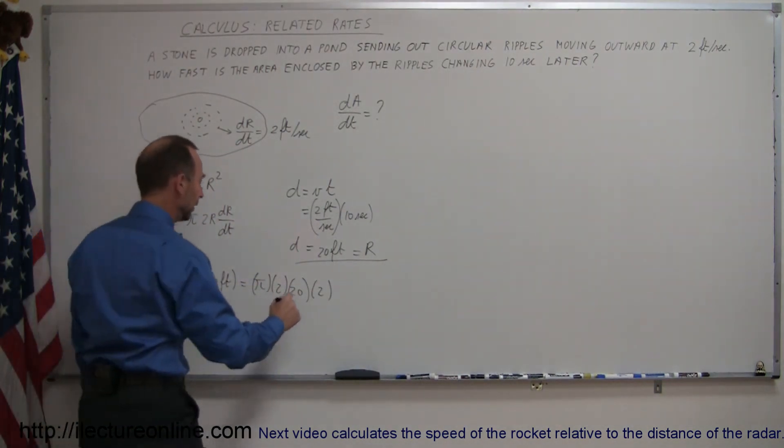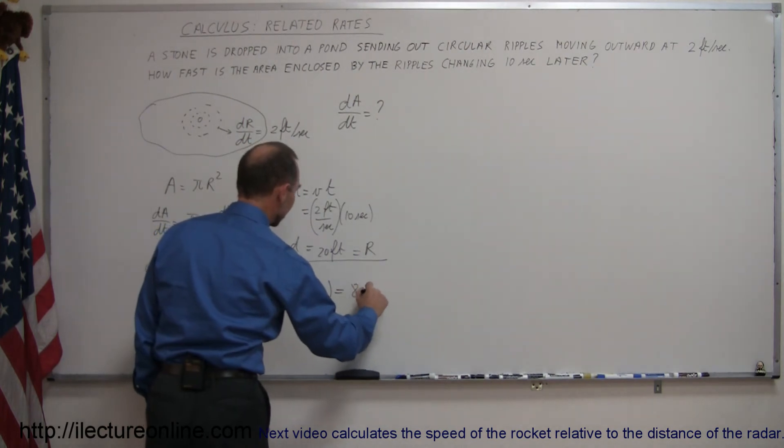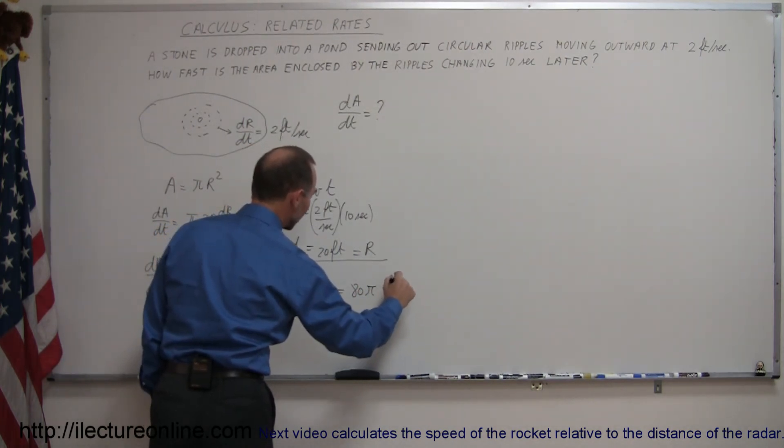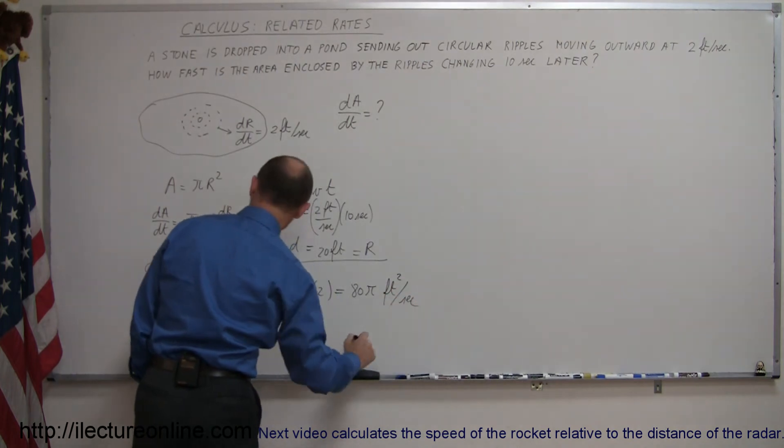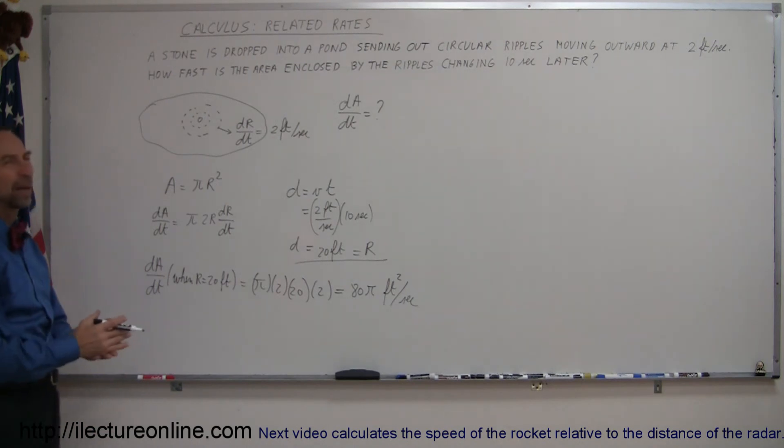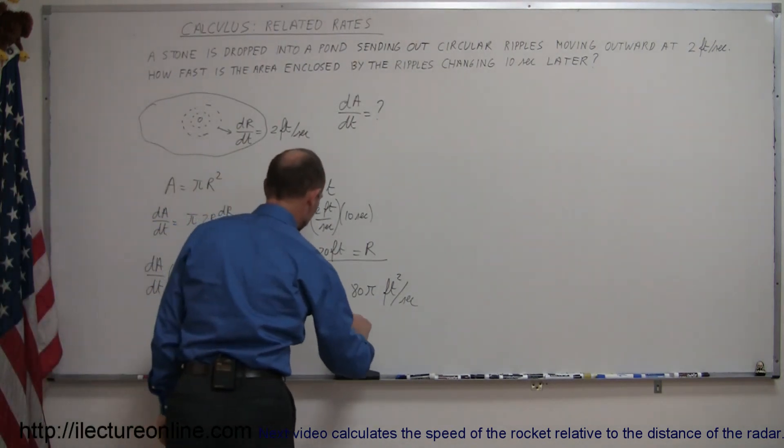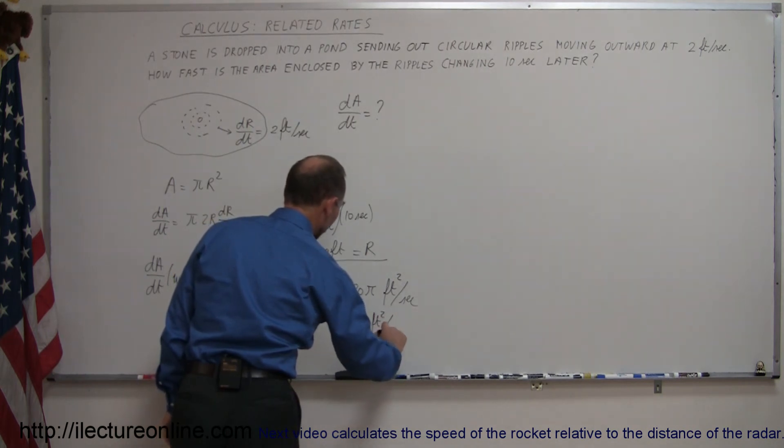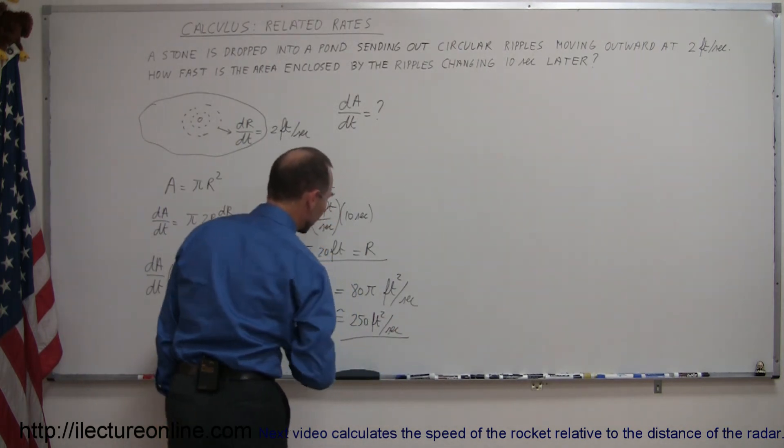So that would be 80π. And that is in square feet per second because it's the area change per unit time. Pi is about 3.14, so that's approximately equal to about 250 square feet per second. There we go.